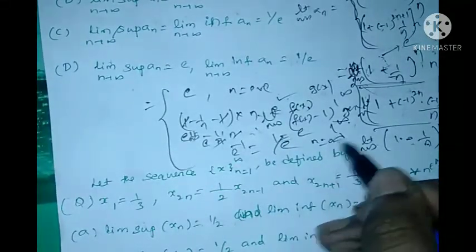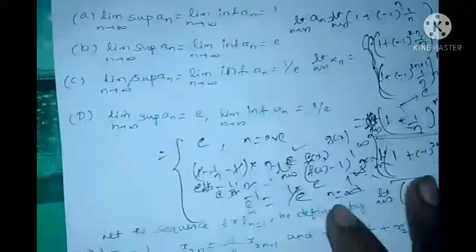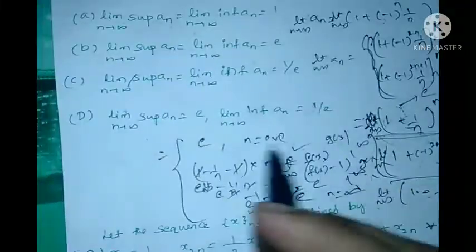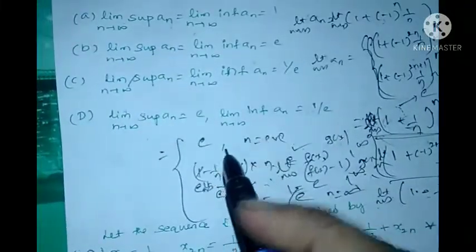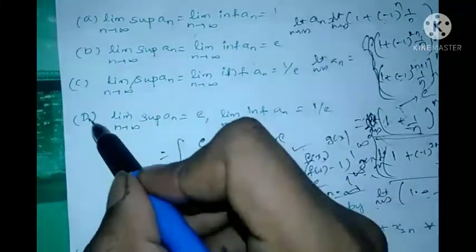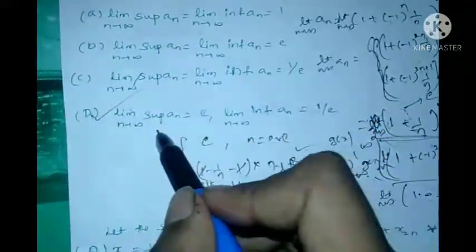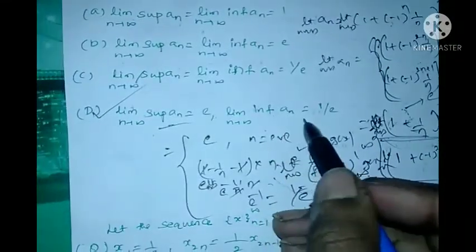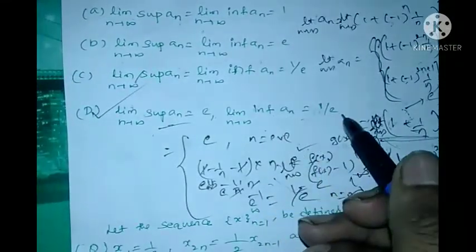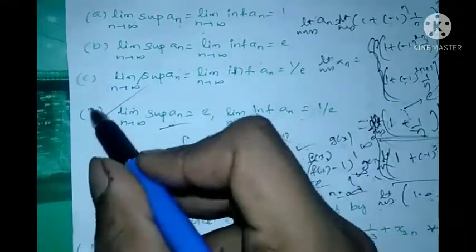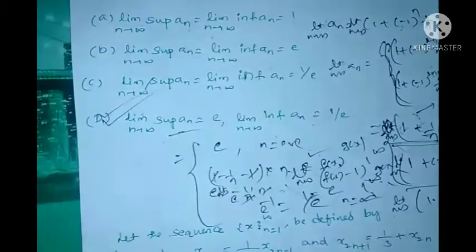So when n is odd, the limit is 1/e. Therefore lim sup of a_n = e and lim inf of a_n = 1/e. Option D is the correct answer.